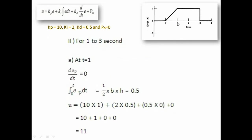For the time period between 1 and 3 seconds, the error plot is a horizontal straight line, so the slope (derivative of error) is 0. The integration remains the same as at t = 1, which is the triangle area of 0.5. Putting these values into the u equation gives u = 11.